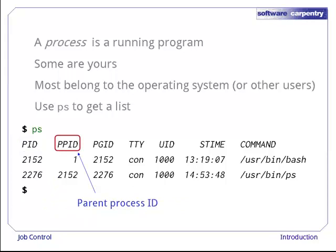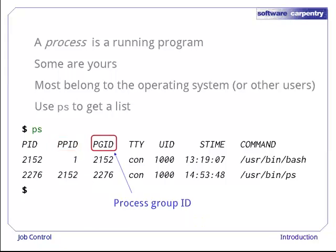The second column in this listing shows the ID of each process's parent. Every process on a computer is spawned by another, which is its parent, except of course for the boot process that runs automatically when the computer starts up. The third column is the ID of the process group this process belongs to. We won't discuss process groups in this lecture, but they're often used to manage sets of related processes.